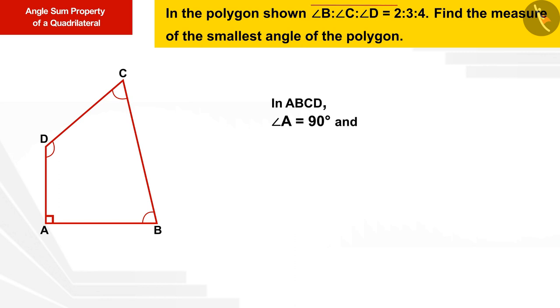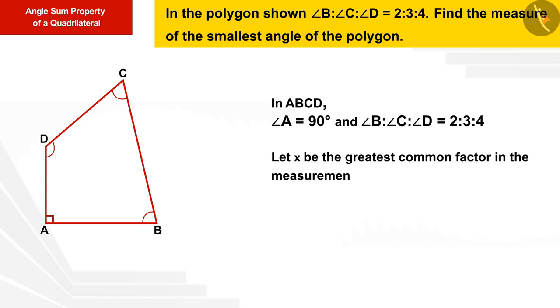In the polygon shown, the ratio in the angles B, C, and D is 2:3:4 respectively. Suppose x is the greatest common factor in the measurement of angles B, C, D. So we can say that angle B will be equal to 2x, angle C equals 3x, and angle D equals 4x.